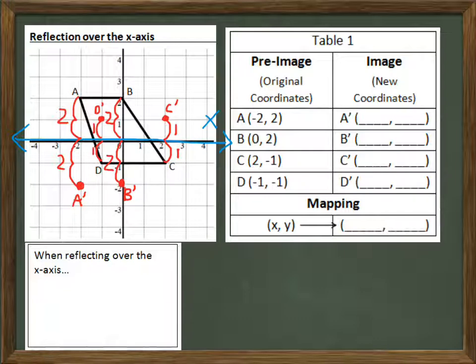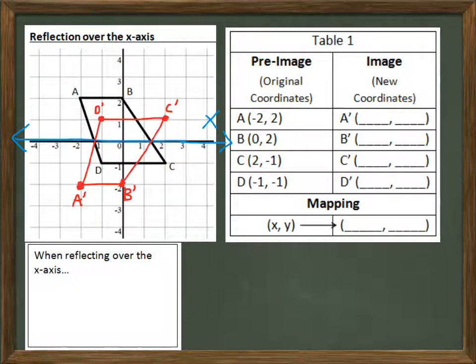Let me erase all these little marks so we can actually see where the figure is. Notice that it's okay for the figure to intersect the x axis and to intersect itself after it's been reflected. You can see that it's been flipped. The top is now on the bottom. So let's record the coordinates and see what happened.